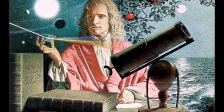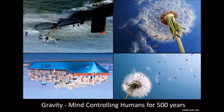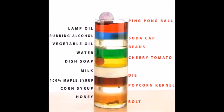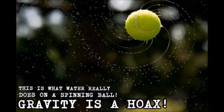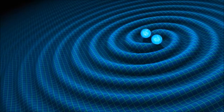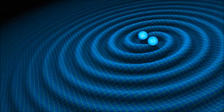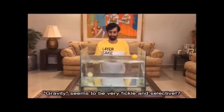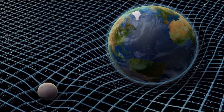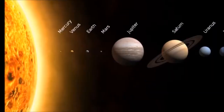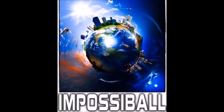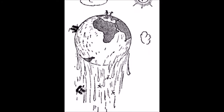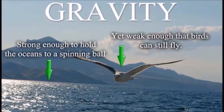Gravity was originally thought of by Freemason Sir Isaac Newton, who claimed that instead of objects falling due to density, they fell due to a mystical pulling force in which a smaller object is attracted to a bigger one. Gravity can be observed nowhere in nature, and scientists claim to have recently discovered gravitational waves yet still can't prove it with experiments. Gravity also seems fickle — it is a force strong enough to hold oceans, buildings, and people to the Earth, yet just weak enough to allow bugs, birds, and planes to fly freely in every direction.